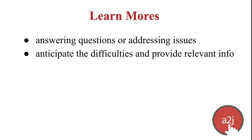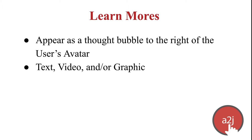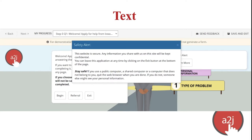First, let's talk about learn mores. The learn more feature works well for answering questions or addressing issues that are better left out of the actual question text. It allows authors to anticipate difficulties an end user may experience and provide them with additional relevant information. The learn more feature inserts a prompt which appears as a thought bubble to the right of the user's avatar. When the end user presses the learn more button, the avatar guide displays a response using one of three question help methods chosen by the author: text, video, or graphic. The most common learn more is a text-only box, where the author anticipates a question and answers it, but only if the user clicks the learn more button.